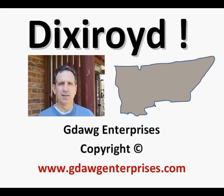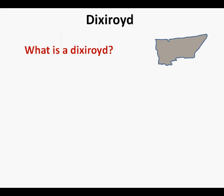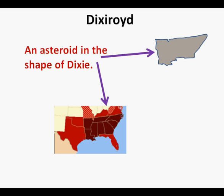Dixieroid. You may be asking yourself, what is a Dixieroid? A Dixieroid is a roid word like steroid or asteroid. This is an image of a Dixieroid — this gray shape at the right. A Dixieroid is an asteroid in the shape of Dixie, the original Old South Confederation of States.